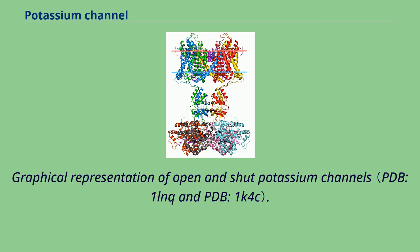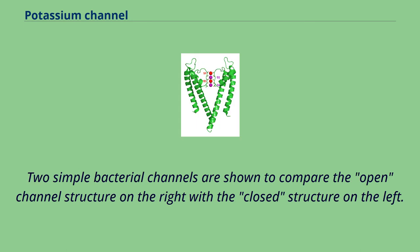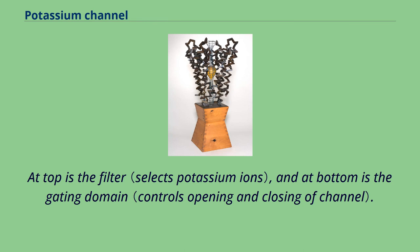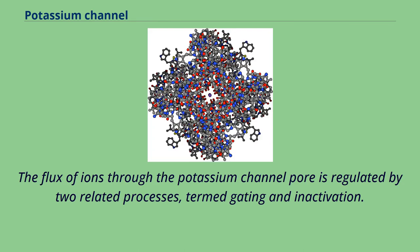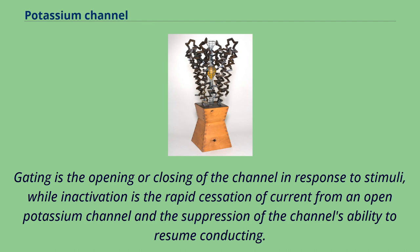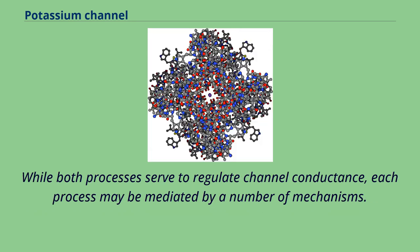Graphical representation of open and shut potassium channels. Two simple bacterial channels are shown to compare the open channel structure on the right with the closed structure on the left, with the filter at top and the gating domain at bottom. The flux of ions through the potassium channel pore is regulated by two related processes termed gating and inactivation. Gating is the opening or closing of the channel in response to stimuli, while inactivation is the rapid cessation of current from an open channel and suppression of its ability to resume conducting.